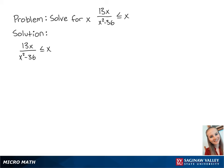For this problem, we're going to solve for x in the inequality 13x over x squared minus 36 is less than or equal to x. First, we want to get the right side equal to 0.